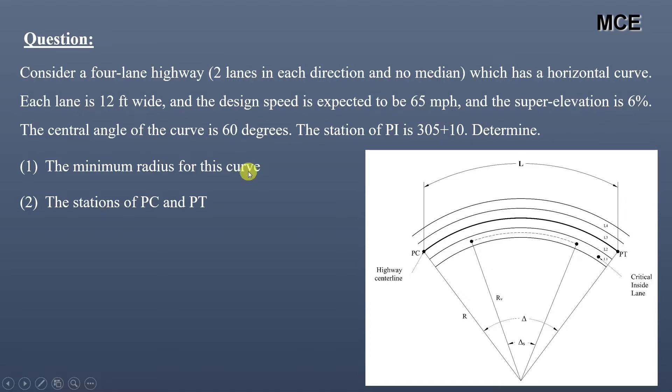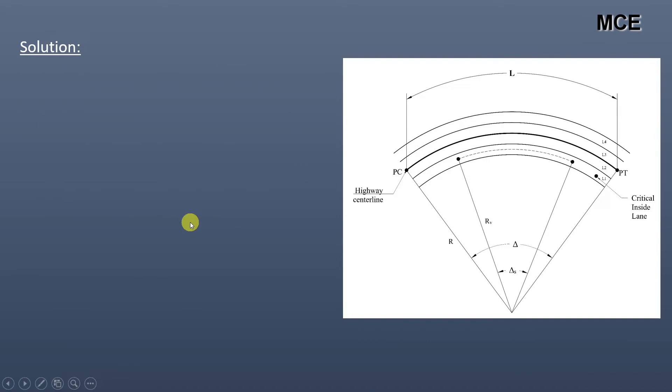The super-elevation is 6%, and the central angle of the curve is 60 degrees. The station of PI is 305+10. Determine: (1) the minimum radius for this curve, and (2) the stations of PC and PT.